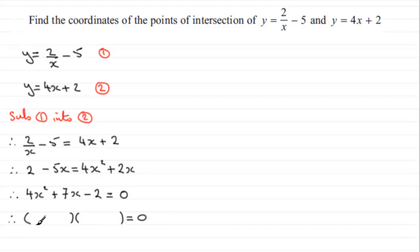What are we going to have? We're going to have a 4x and an x there. And I can see that if I put a 2 there, a plus 2, that's going to be 8x. And then if I put minus 1 there, that's minus x. So it's going to give me 7x. And minus 1 times plus 2 is minus 2. So it's factorized.